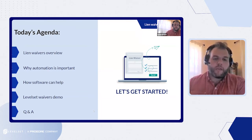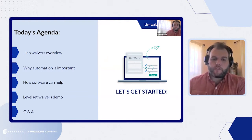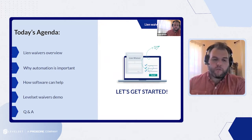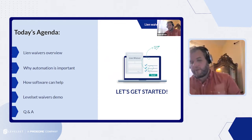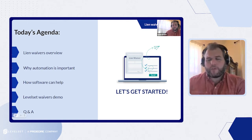For today, we will be doing an overview of lien waivers — what they are. I'm sure a lot of you are familiar with them, but there are some things we always like to cover to better explain the overall process. We'll talk about why automating lien waivers is important versus how processes often work for our customers, and then how we can help. At the end of this conversation, we will have a quick demo about how lien waivers are actually managed in Levelset, and we'll save the questions for the end of the presentation. Please use the Q&A box at the bottom of the screen, and we will go over them towards the end of the call.